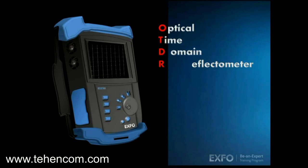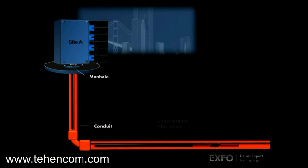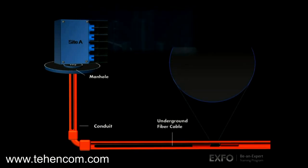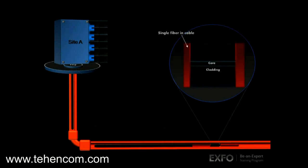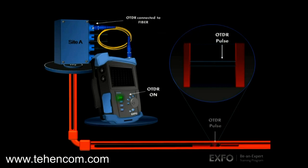Breaking down the name reveals that an OTDR conducts timed measurements of reflected light. The OTDR operates on a principle similar to radar. A pulsed laser signal is injected into the glass fiber, and the subsequent backscattered or reflected signal is timed and measured for both power and distance.